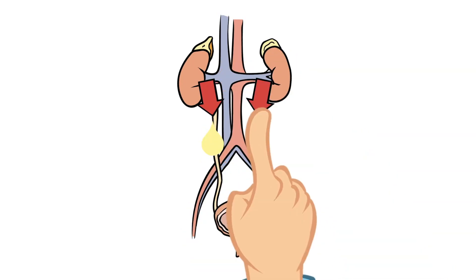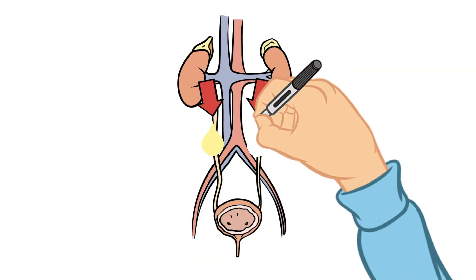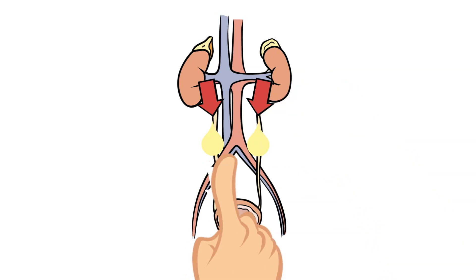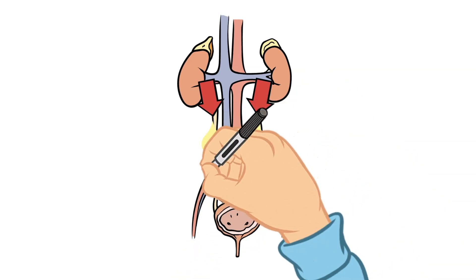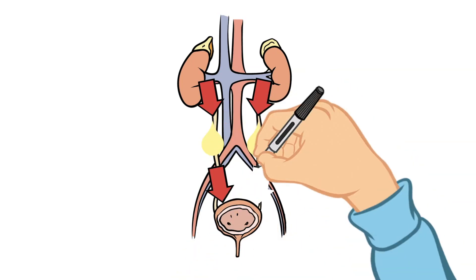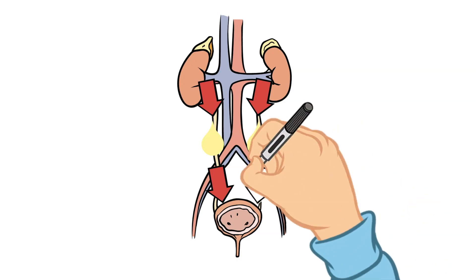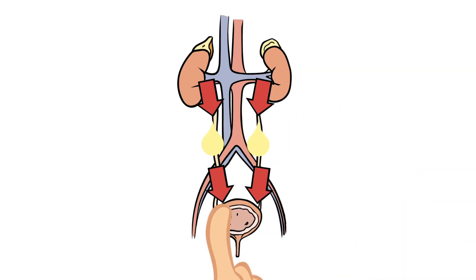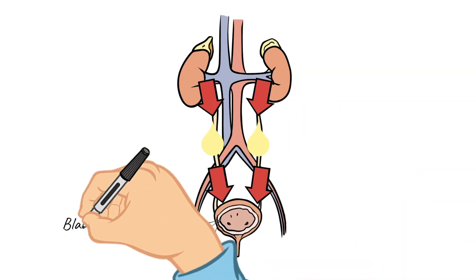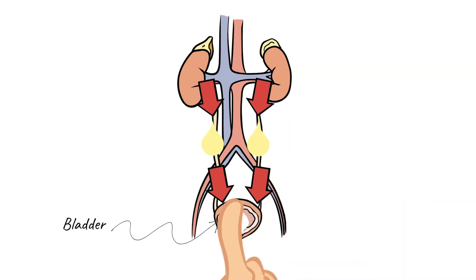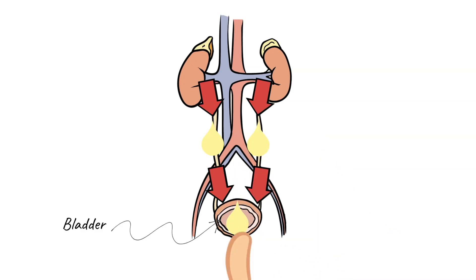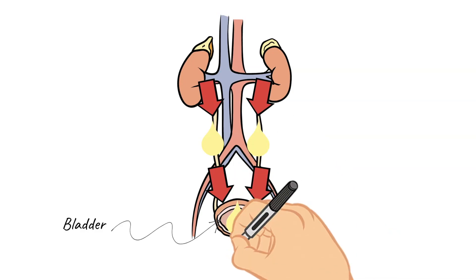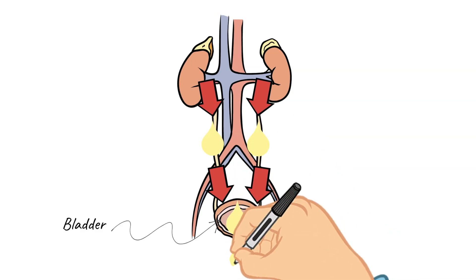The bladder then acts as a temporary storage for your urine. When your bladder gets full, you will feel the urge to pass out urine through a process called urination. Urine flows from the bladder into the urethra and out of the body.